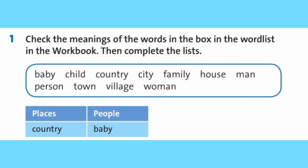Places and People. Для того, чтобы выполнить первое задание, тебе нужно начертить таблицу в тетради, в которой будет две колонки: Places — Места, People — Люди. И в книге уже дан пример: в графе Places — Country (страна), в графе People — Baby (ребенок).